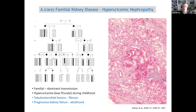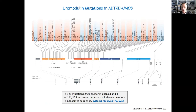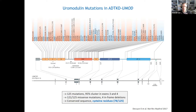The group of Tony Bleyer in Winston-Salem, North Carolina identified the first mutations responsible for this disease, and several other European groups followed. The mutations were found in UMOD, the gene coding for Tamm-Horsfall protein or uromodulin. Over the years, more than 150 mutations have accumulated. The mutation landscape is very interesting: there is a hotspot in exons 3 and 4, and the vast majority — more than 99% — are missense mutations. Half of these missense mutations target cysteine residues, already suggesting folding problems in the mutant protein.